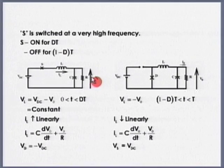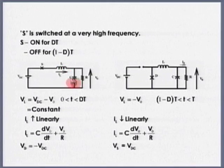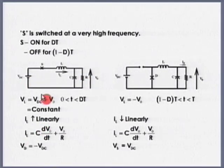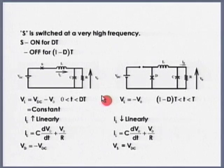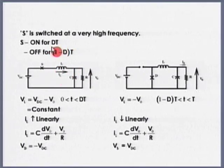We need to regulate V_out, and in one switching cycle I will assume this voltage remains constant. When the switch is on, voltage across L is V_DC − V_out. In one switching cycle, V_DC is assumed to remain constant. V_out will remain constant because it has to be regulated. Therefore V_DC − V_out is a constant, so voltage across the inductor is constant during D × T, and inductor current will increase linearly.